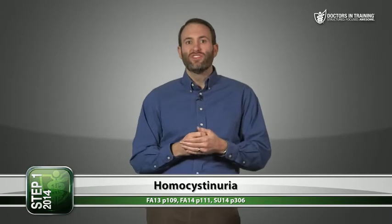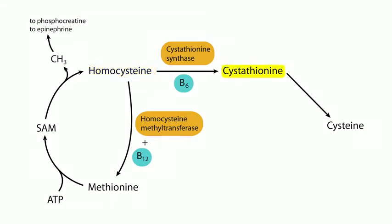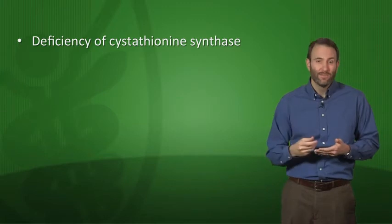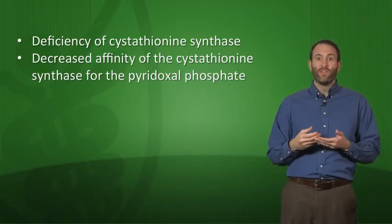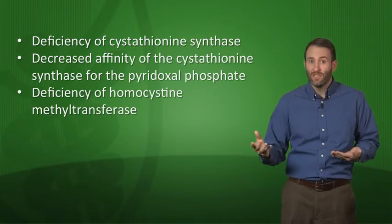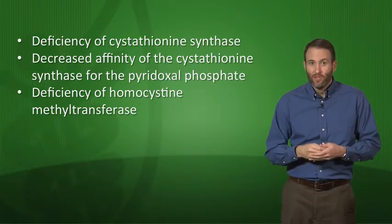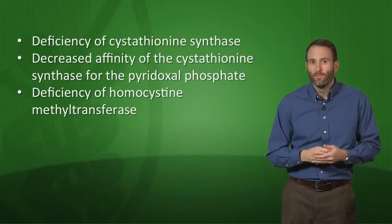Moving on to homocystinuria — this means having homocysteine in the urine. Homocysteine is usually converted to cystathionine by the enzyme cystathionine synthase, which requires cofactor B6, and then cystathionine is converted to cysteine. Causes of homocystinuria include: deficiency of cystathionine synthase, decreased affinity of cystathionine synthase for pyridoxal phosphate (B6 cofactor), or deficiency of homocysteine methyltransferase, which converts homocysteine back to methionine.